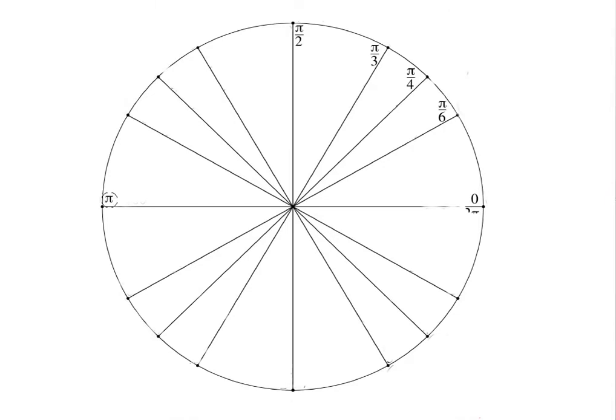If you went another quarter of the circle, you'd be at pi, another quarter of the circle, you'd be at 3 pi over 2, and all the way back around, you'd be at 2 pi, which is the same angle on the unit circle as zero.